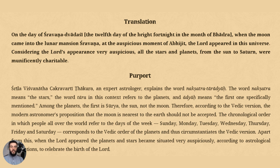In Srimad Bhagavatam, the sages gave great importance to nakshatra theory. For anyone who says astrology is maya or not bona fide, there are many verses that prove otherwise. On the day of Shravana Dvadashi — the 12th day of the bright fortnight in the month of Bhadra — when the moon came into the lunar mansion of Shravana at the auspicious moment of Abhijit, the Lord appeared. This is from Canto 8. All the planets and stars from the Sun to Saturn were munificently charitable at that time.